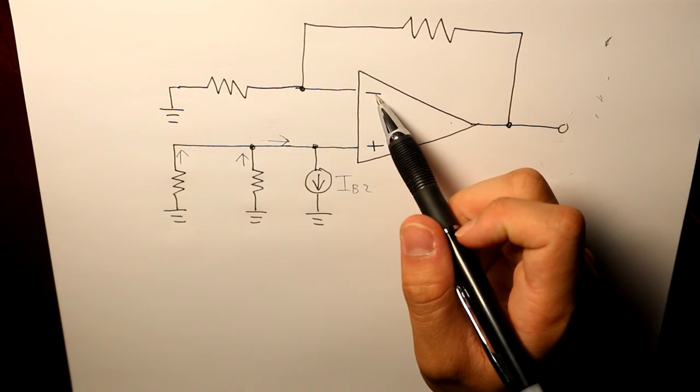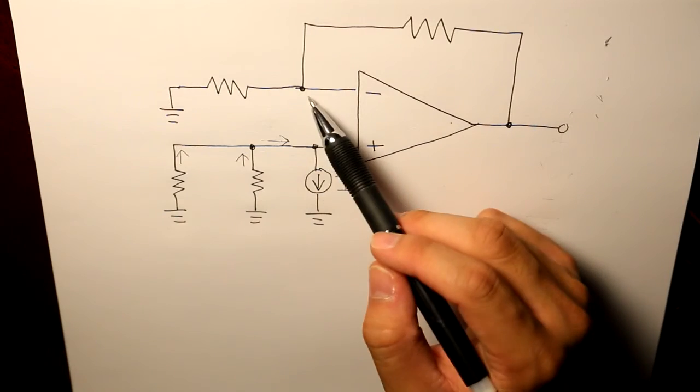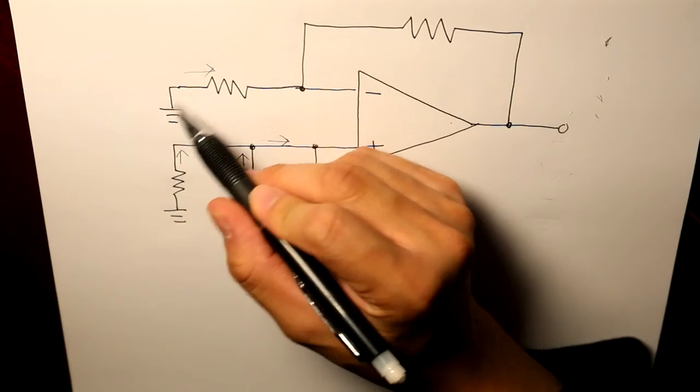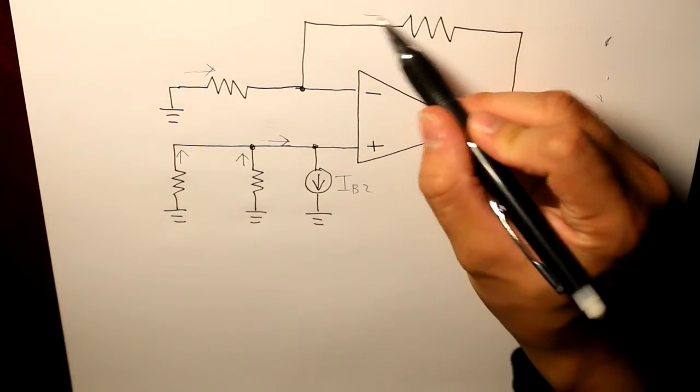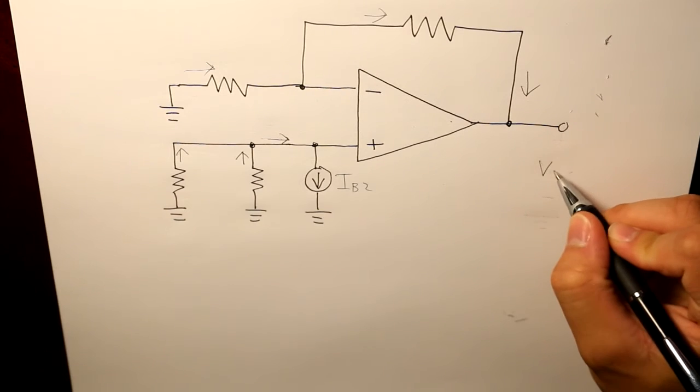Either for the negative input terminal as well, but there is current flowing this time from the ground through the feedback resistor, and then to the output right here.